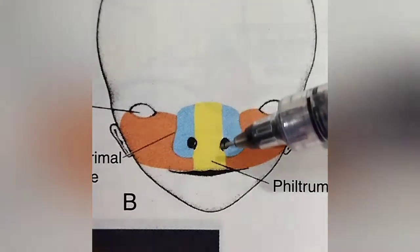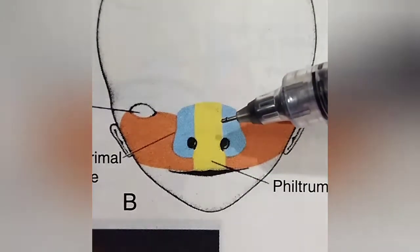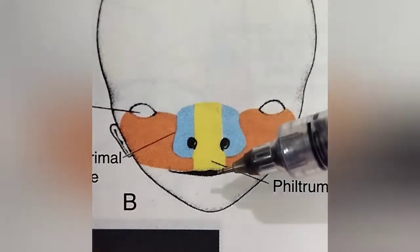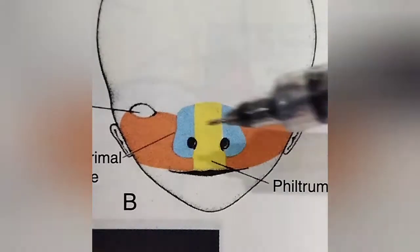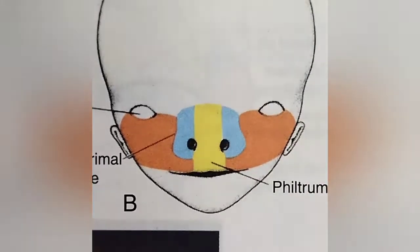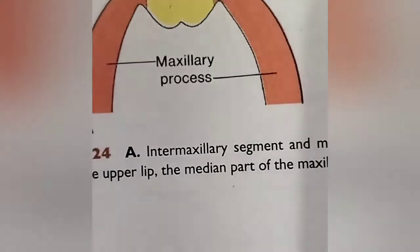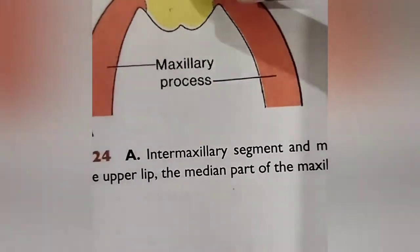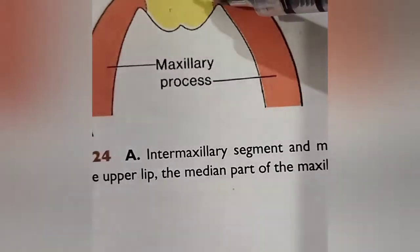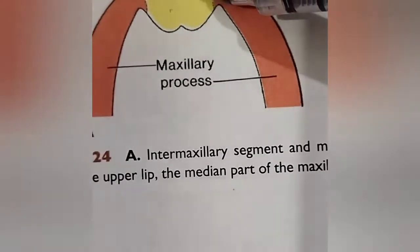The medial nasal prominences unite and form some structures. These two are the maxillary prominences. The deeper portion of the maxillary prominence — specifically this portion of the medial nasal prominence — is known as the inter maxillary segment.